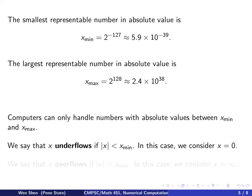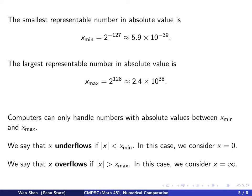If you have a number outside that range: if the absolute value is less than x_min, the number underflows, and the computer sets it to 0. On the other hand, if the number is so large in absolute value that it exceeds x_max, it overflows, and the computer assigns it to be infinite and will probably return an error message.